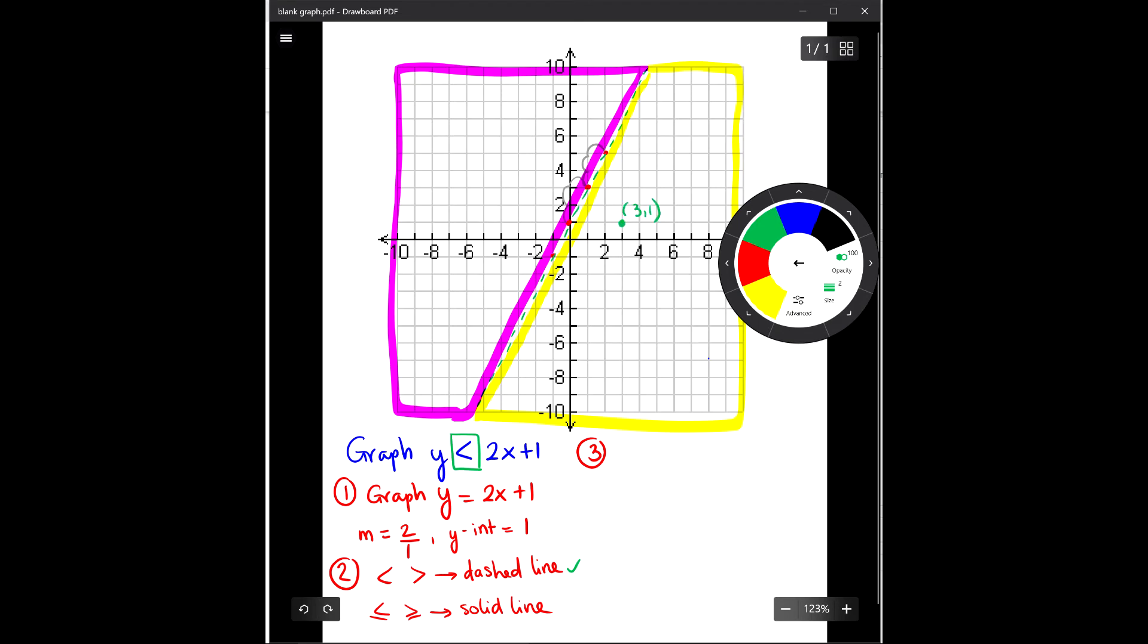And I will check with this point to see if it works with our inequalities. Pick a point to check. And I pick three comma one, so now I have my x value is three and my y value is one. And I use the inequality, which is y is less than 2x plus 1.